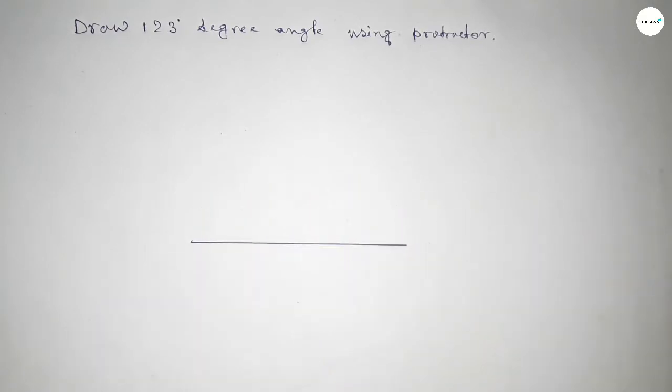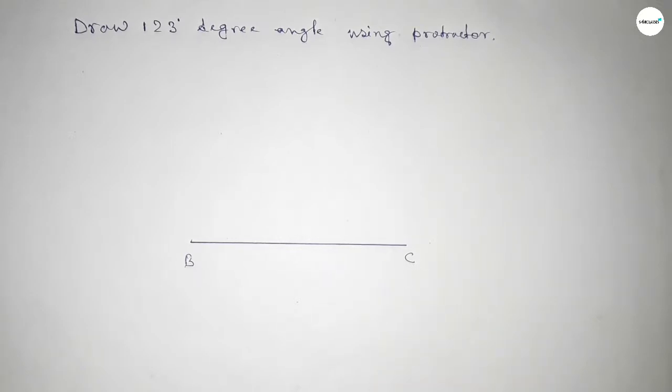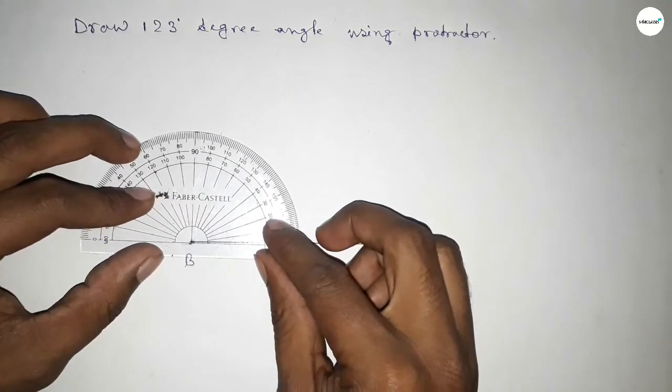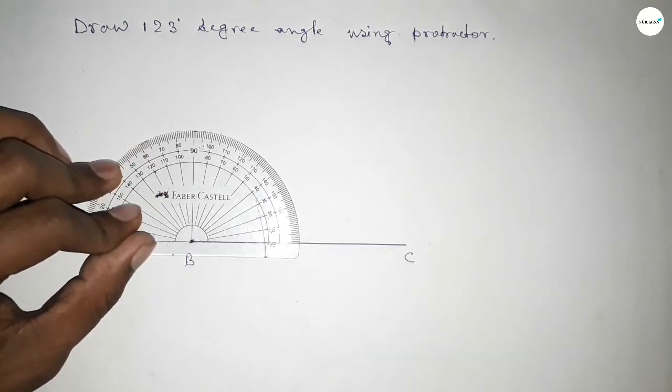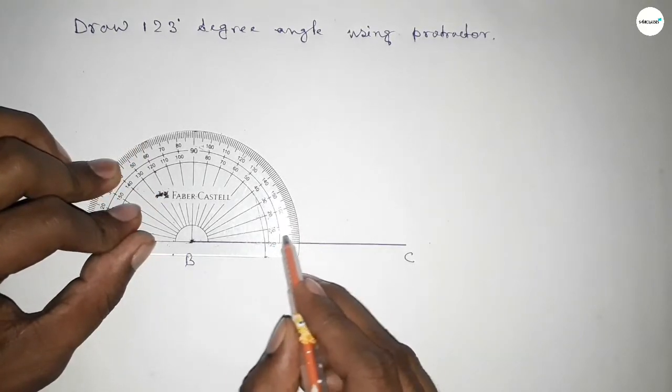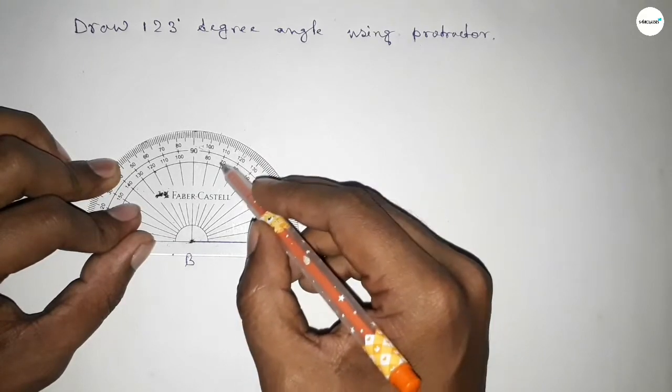First, drawing here a line, next taking here point B and here point C. Now putting the protractor on point B perfectly, then counting the angles. So this is starting angle: 0, 10, 20, 30, 40, 50, 60, 70...